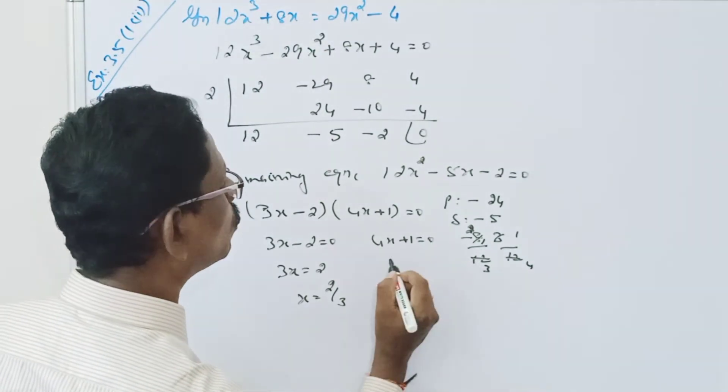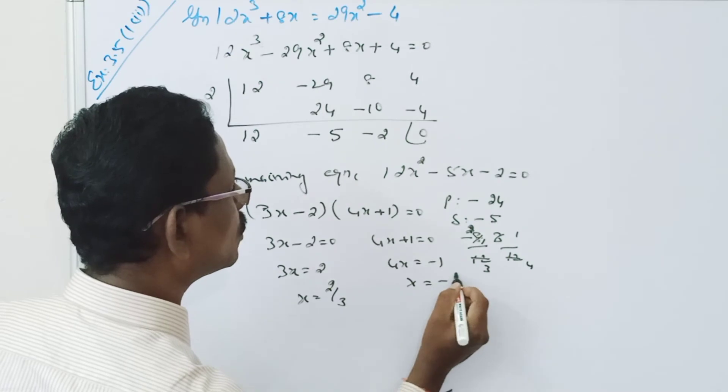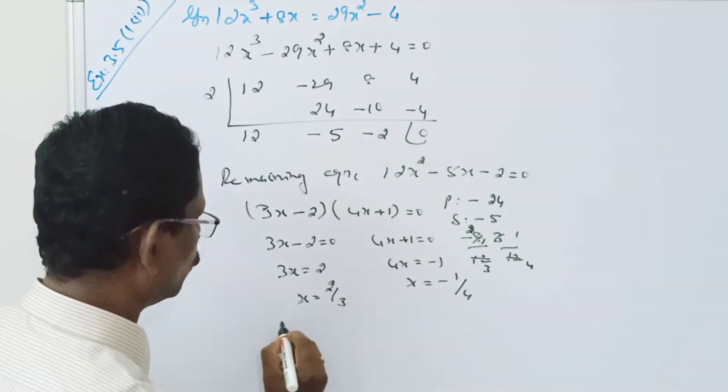4x is equal to minus 1. x is equal to minus 1 by 4.